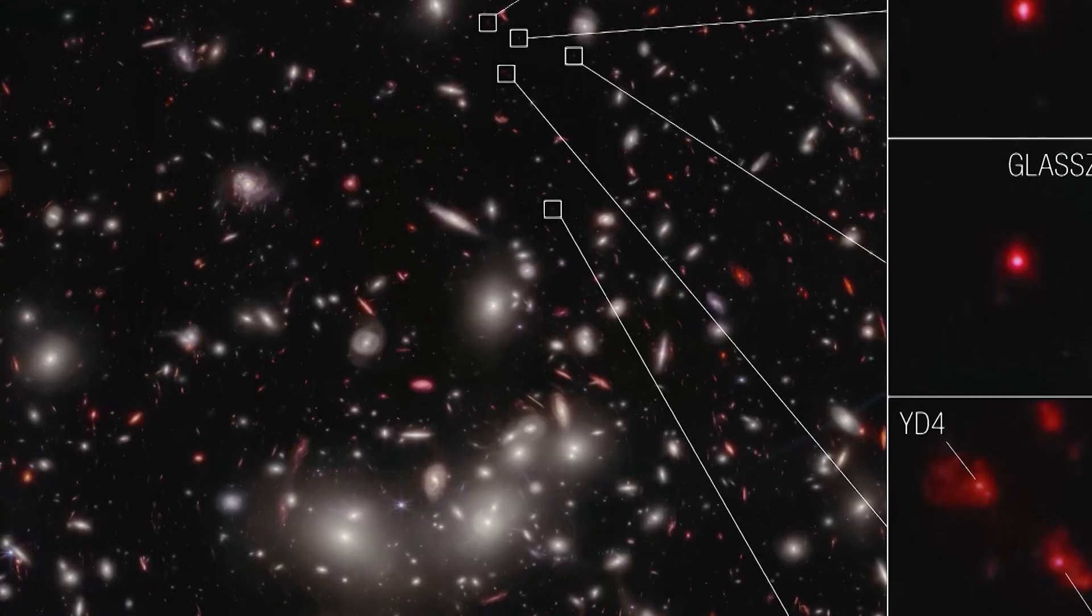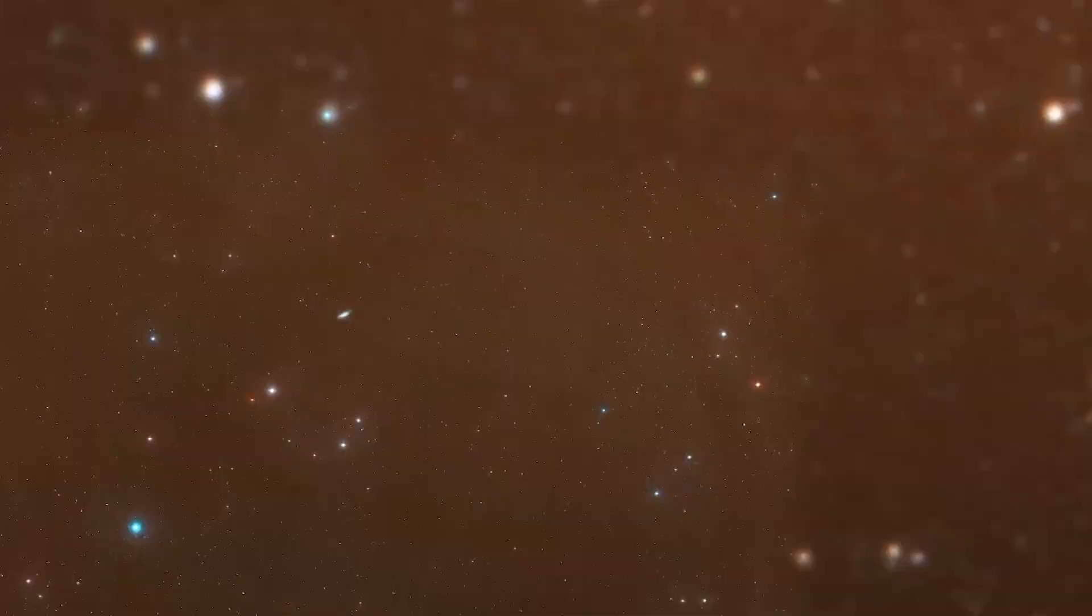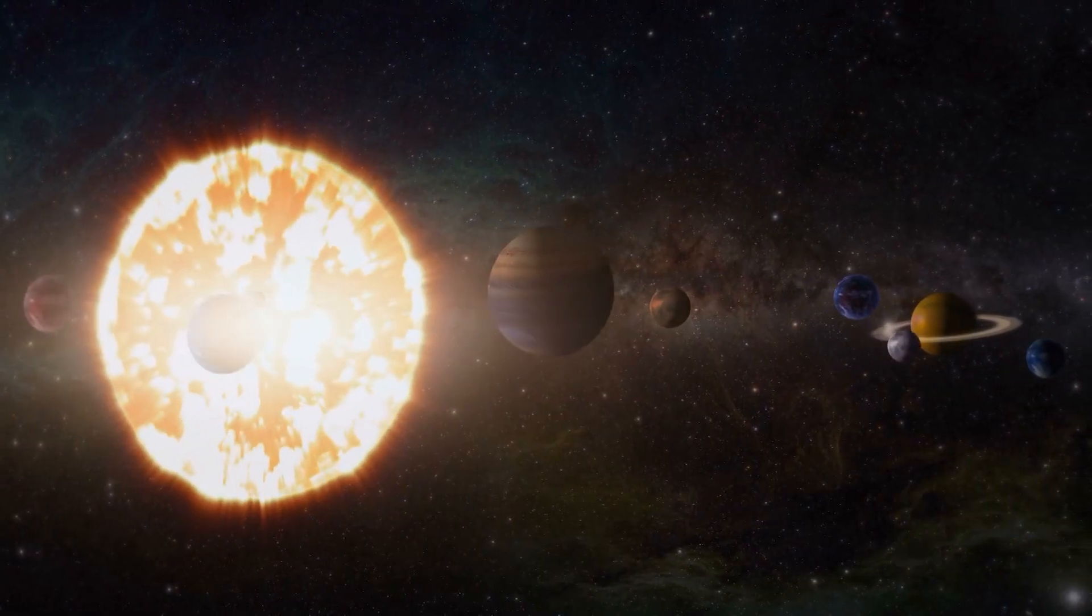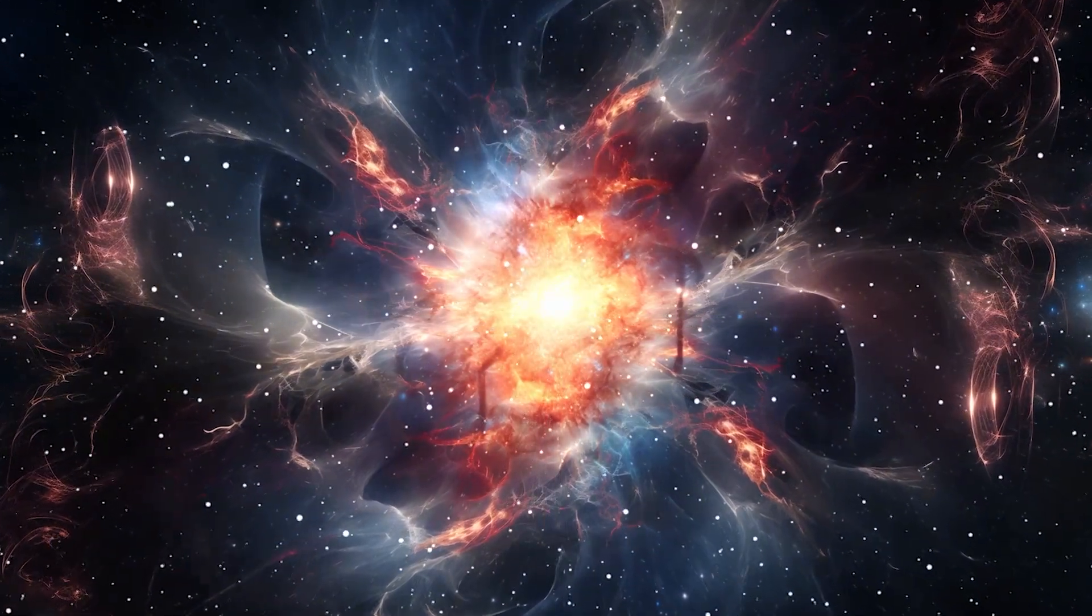GNZ-11, located over 13.4 billion light years away in the constellation Ursa Major, has been a subject of fascination since its initial detection. It exists so far back in time that light from it began its journey to Earth a mere 400 million years after the Big Bang.